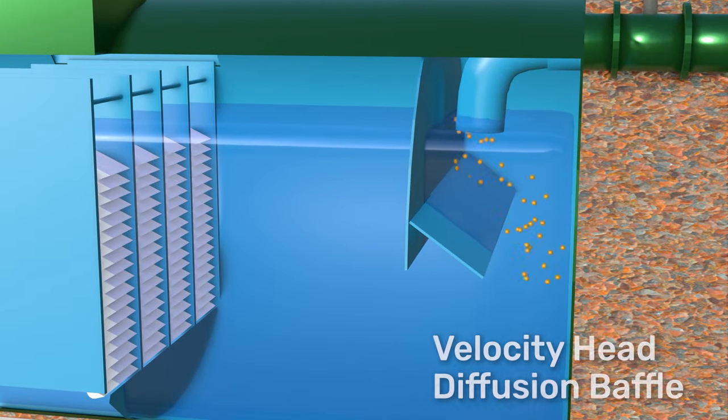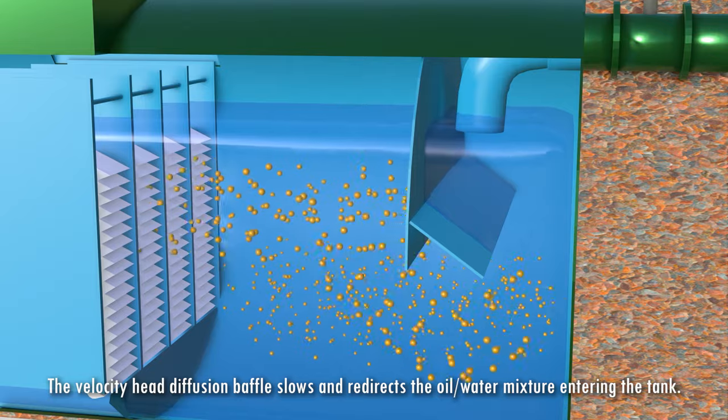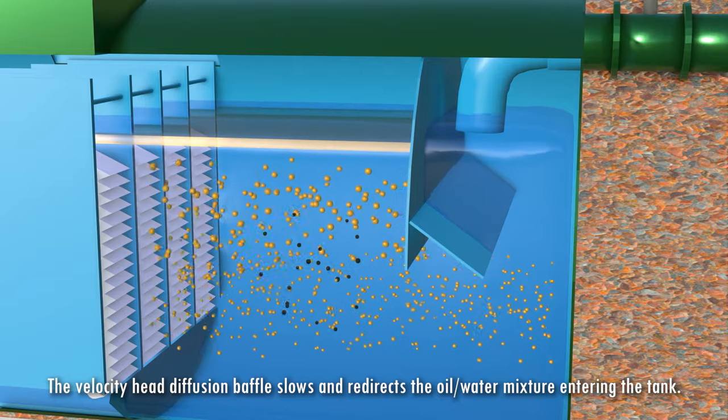We're hitting a velocity head diffusion baffle which is slowing down the turbulence, creating a nice laminar flow.